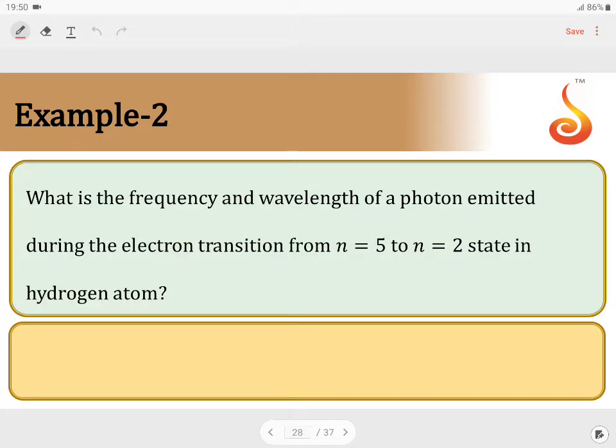Let us learn how to solve this question. What is the frequency and wavelength of a photon emitted during the electron transition from n equals 5 to n equals 2 state in hydrogen atom? So we have to calculate the frequency and the wavelength. They have given hydrogen atom.